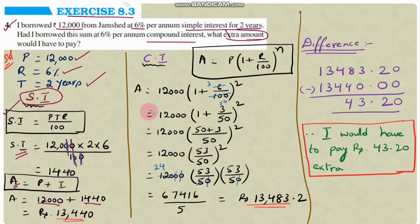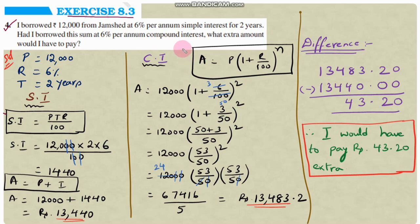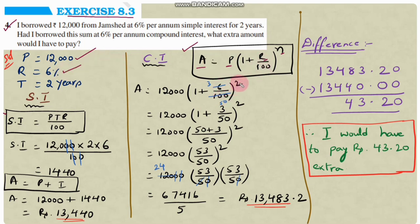Now let us find the amount under compound interest. The formula is: Amount A = P × (1 + R/100) to the power of N, where P is principal, R is rate of interest, and N is number of years. Substituting: A = 12,000 × (1 + 6/100) squared, since time period is 2 years.